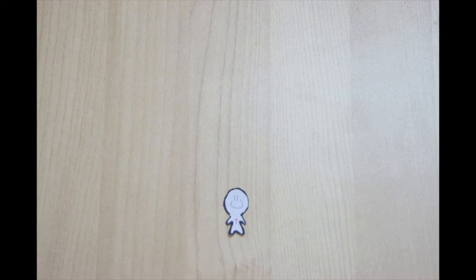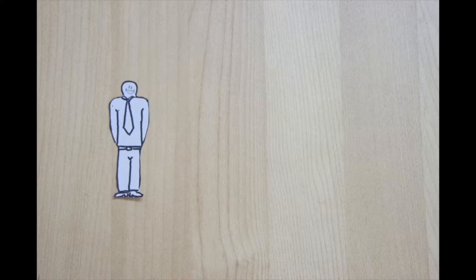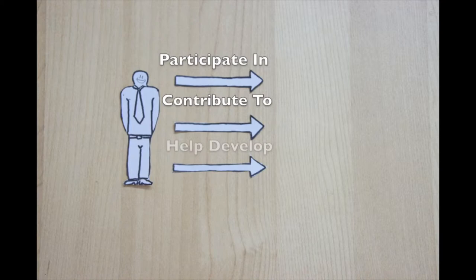The first component is people. The most important aspect of integrating Toyota's system is the human element. Everyone in the company is not only encouraged but expected to participate in, contribute to and help develop the process. They call this strategy Kaizen, which means never-ending efforts for improvement.